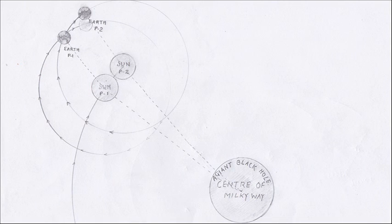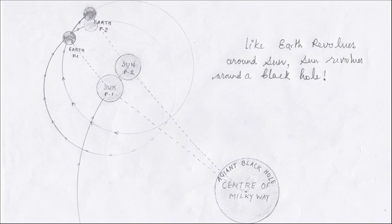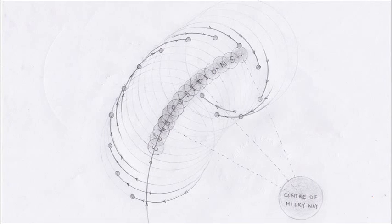When Earth revolves around sun at the same time, sun revolves around its own center of gravitational pull. By these two continuous motions of Earth and sun, we get a spiral orbit like this.